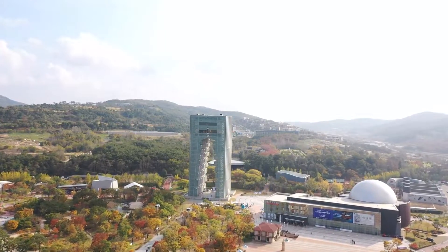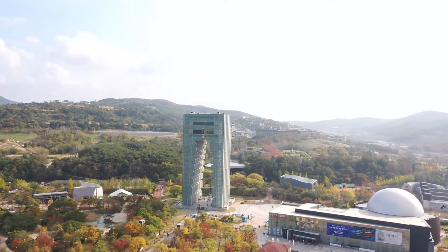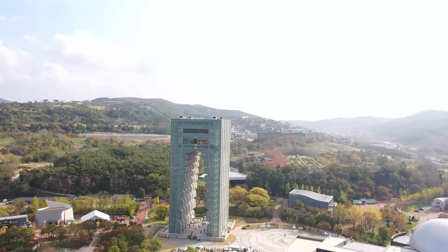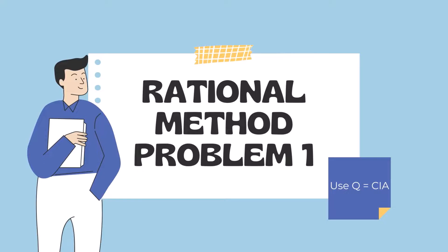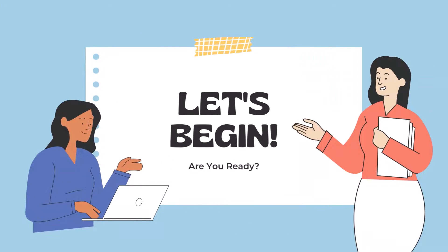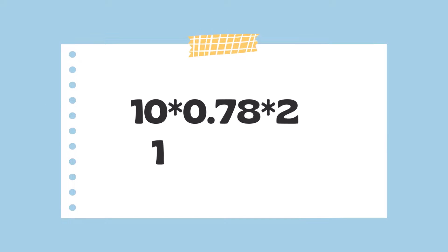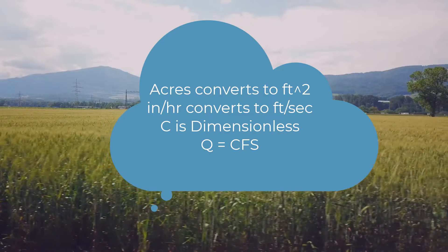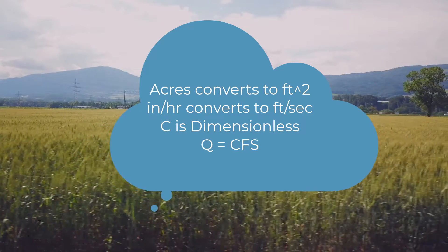Let's go over two different rational method design examples — one that is much simpler and one that has a few more advanced features. For the first one, we want to determine the peak flow of a site with an area of 10 acres, a runoff coefficient of 0.78, and a rainfall intensity of 2 inches per hour. Using Q equals CIA: Q equals 0.78 times 2 times 10 acres, giving us a peak flow value of 15.6 CFS. The different dimensions of the equation all work out correctly in the problem.